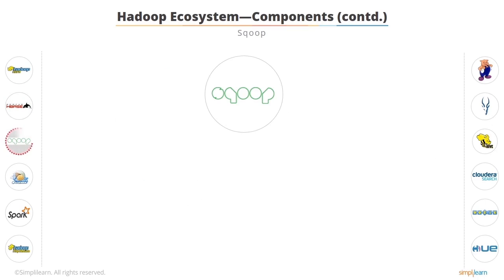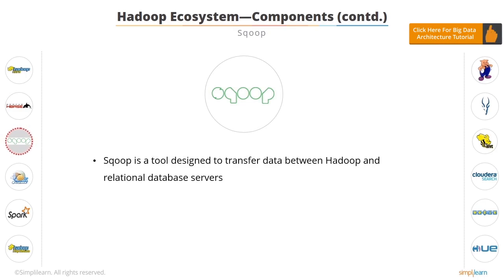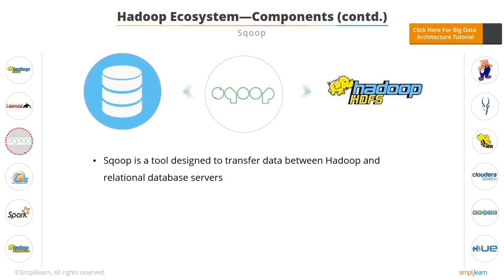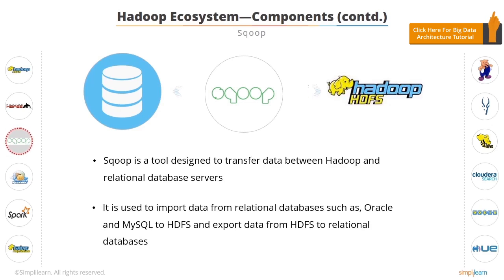Now let's understand how data is ingested or transferred to HDFS. It is done by Sqoop. Sqoop is a tool designed to transfer data between Hadoop and relational database servers. It is used to import data from relational databases such as Oracle and MySQL to HDFS, and to export data from HDFS to relational databases.